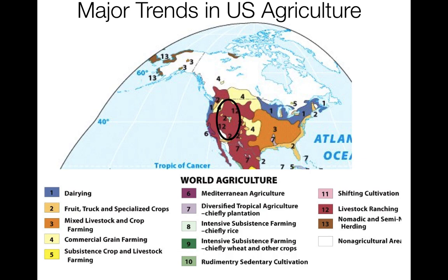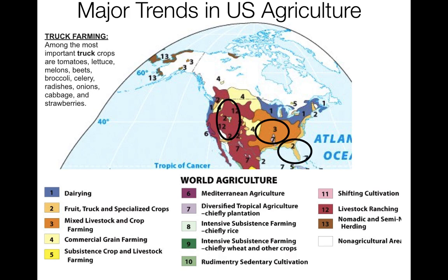Looking at the rest of the United States, we can see that here in the Great Plains, livestock ranching is the most common type of land use. Here in the Midwest, we can see mixed livestock and crop farming. Down in the South, in Florida, truck farming — including growing things like tomatoes, lettuce, melons, beets, etc., as well as other forms of fruit. And finally, up in the Northeast, we have dairying.